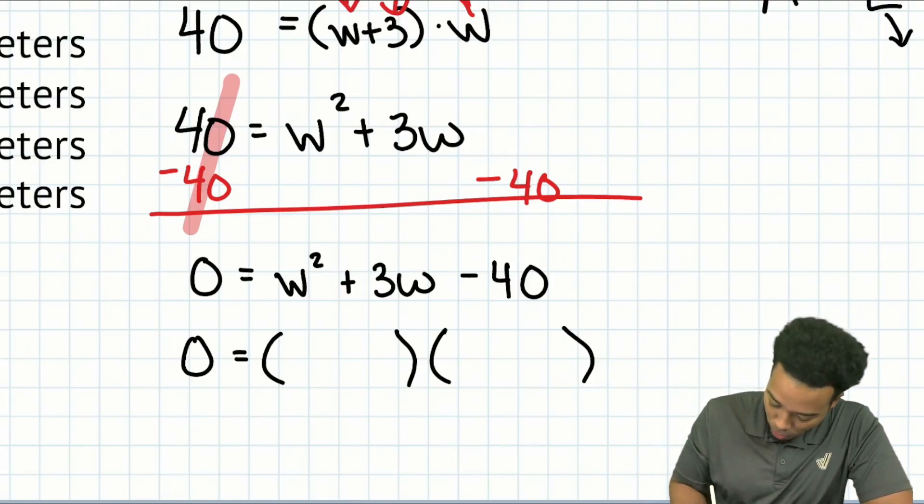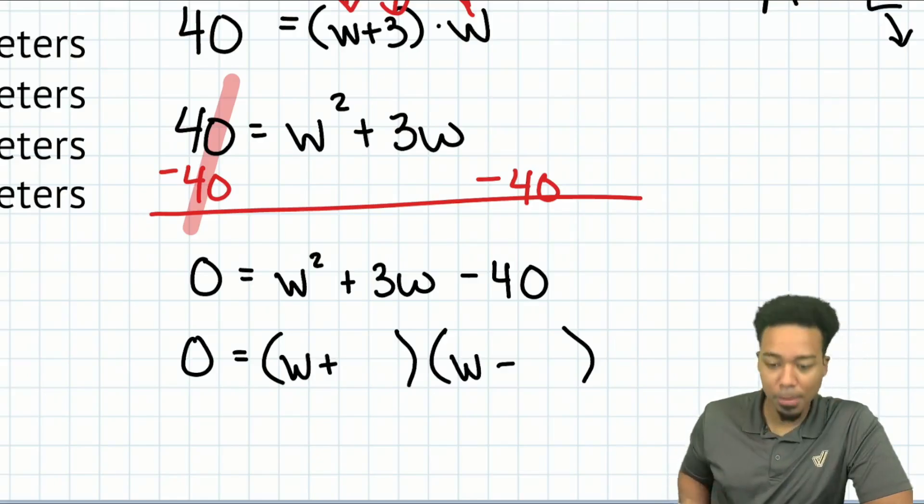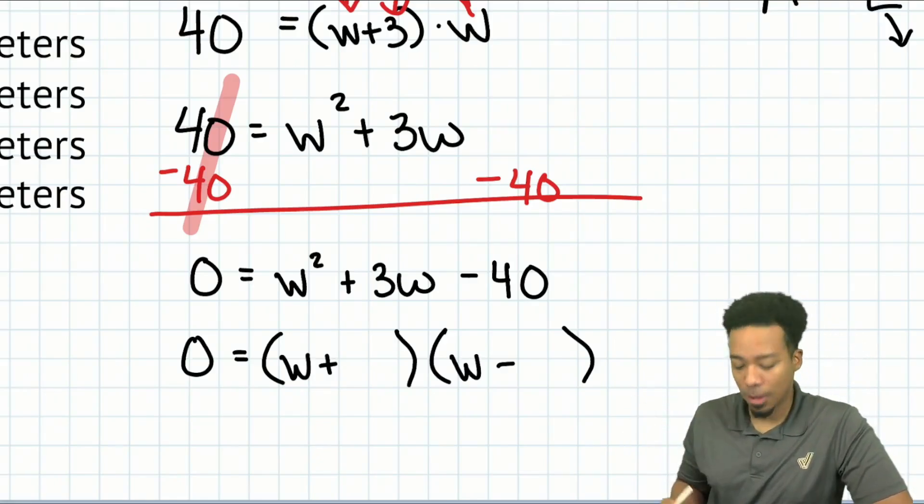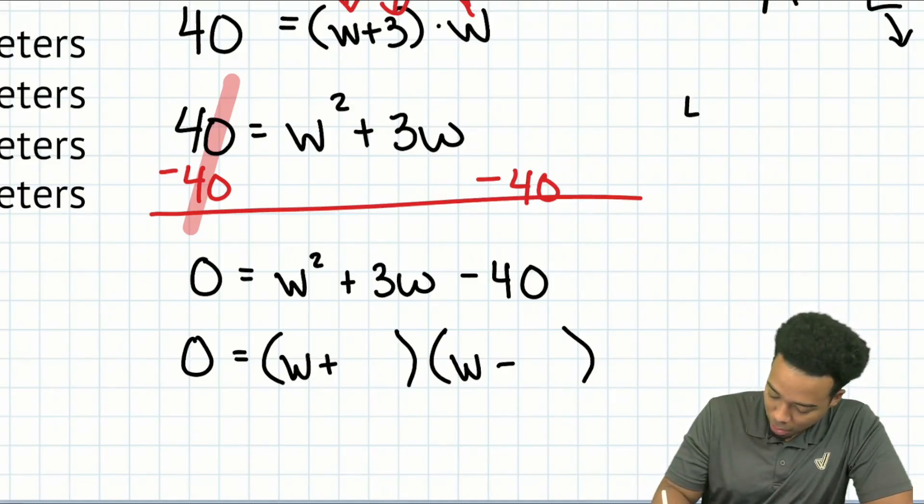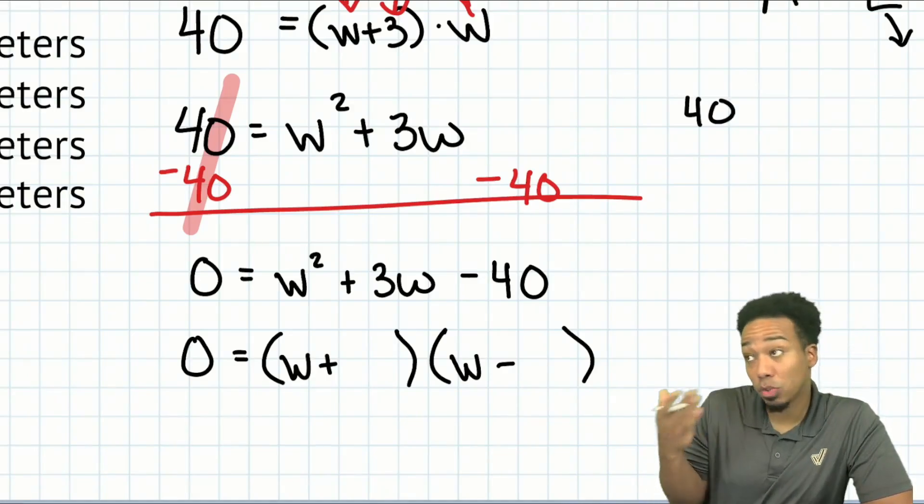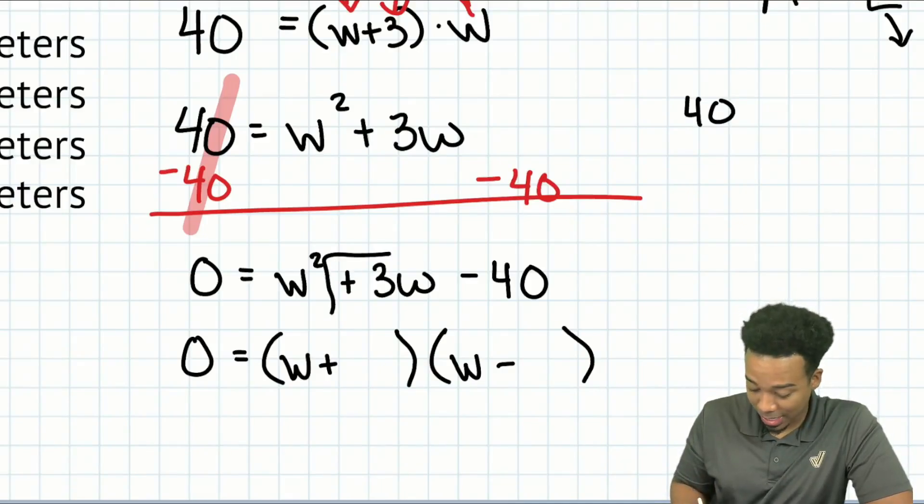So to get a negative 40, we're multiplying a positive and a negative number. So I can tell right over here that we'll have a plus and a minus.